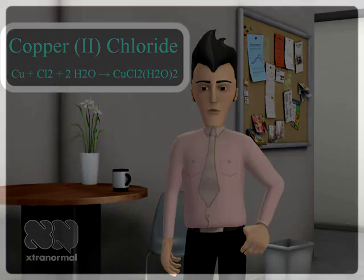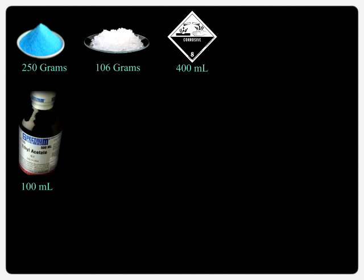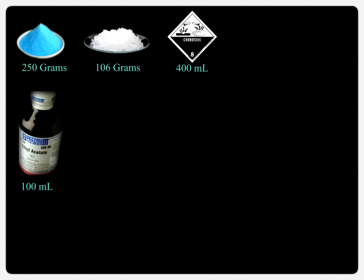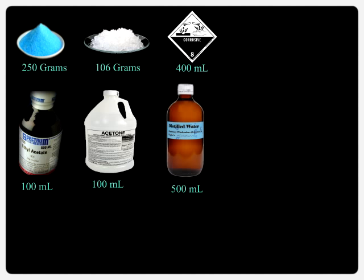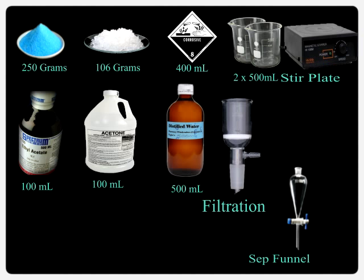We will be needing the following items for this synthesis: 250 grams of copper sulfate, 106 grams of sodium carbonate, 400 milliliters of 32% hydrochloric acid, 100 milliliters of ethyl acetate, 100 milliliters of acetone, 500 milliliters of distilled water, two 500 milliliter beakers, a stir plate, a 250 milliliter separation funnel, and filtration.